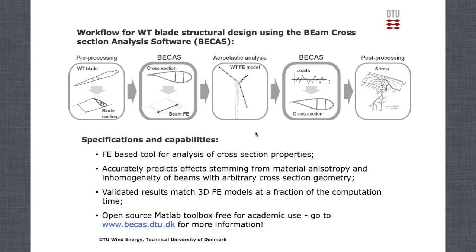In terms of specifications and capabilities of BIKES, this is a finite element based tool for analysis of cross-section properties — stiffness and mass properties — with the biggest challenge being the stiffness properties. It is able to predict the effects stemming from material anisotropy and inhomogeneity, with various materials throughout the cross-section, and also handles arbitrary cross-section geometries. This extra accuracy is needed to represent the response of the blade very accurately in the aeroelastic model, including the torsional stiffness, which affects aerodynamic loads.